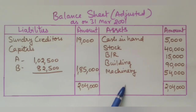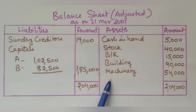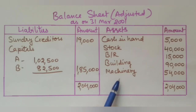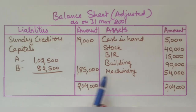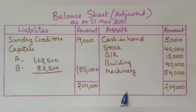This is the chapter on change in profit sharing ratio due to reconstitution of the partnership firm. We have learned the complete accounting process: calculating the new ratio, identifying sacrificing and gaining partners, calculating goodwill, preparing the revaluation account, distributing reserves, and adjusting capital accounts — covering the full accounting treatment at the time of reconstitution.